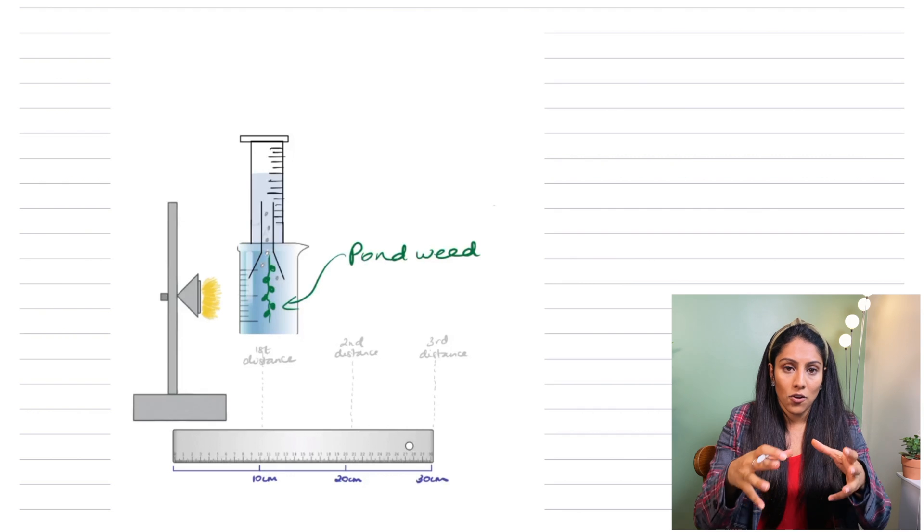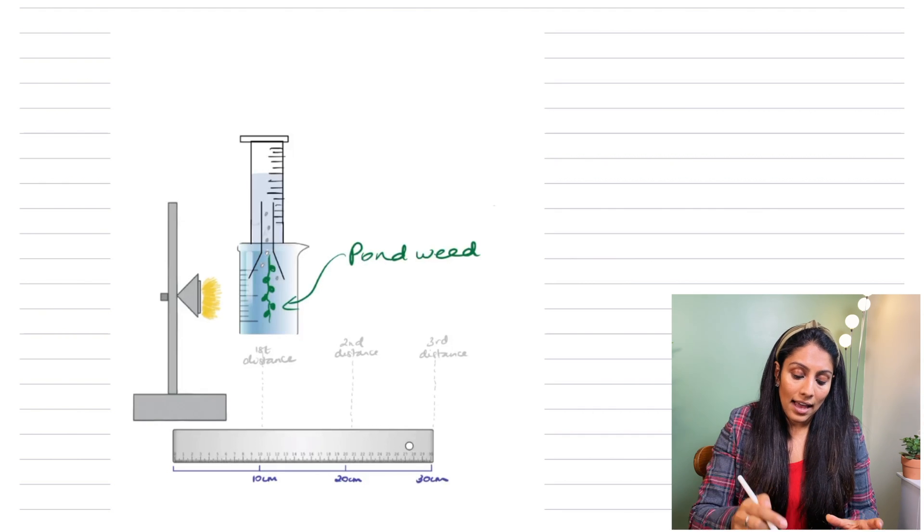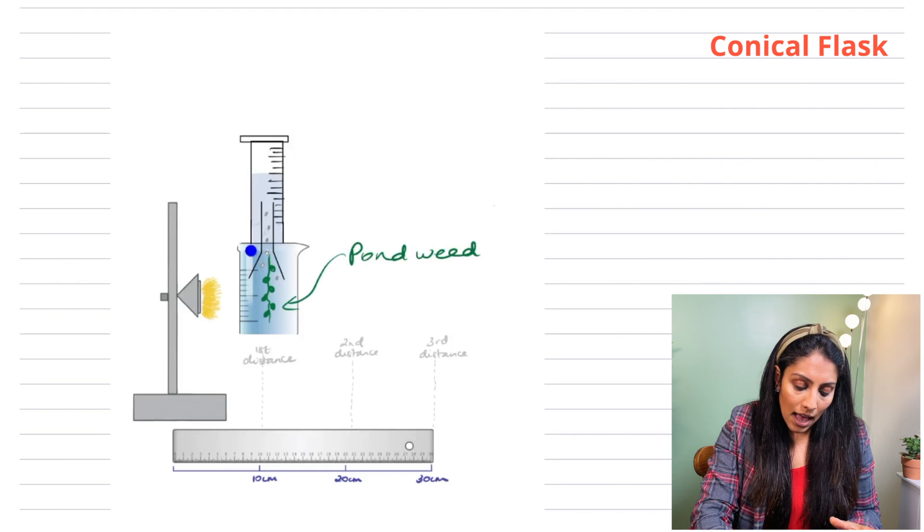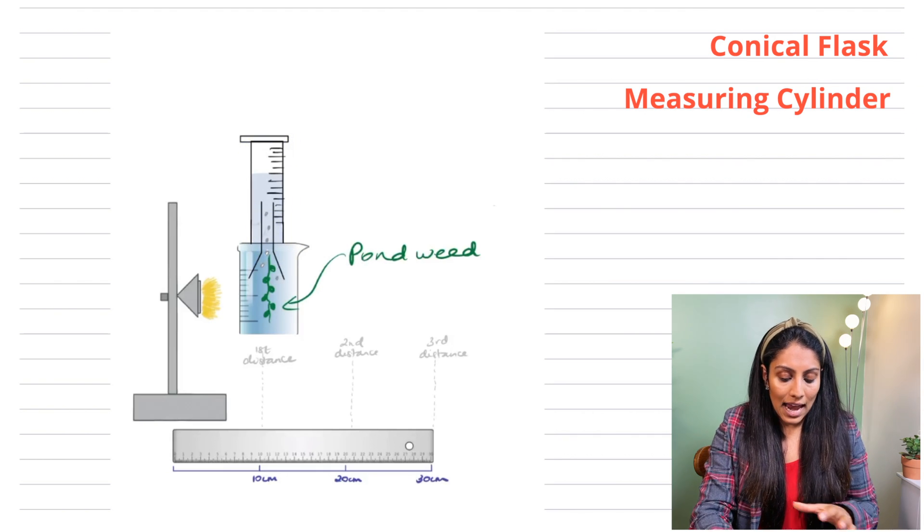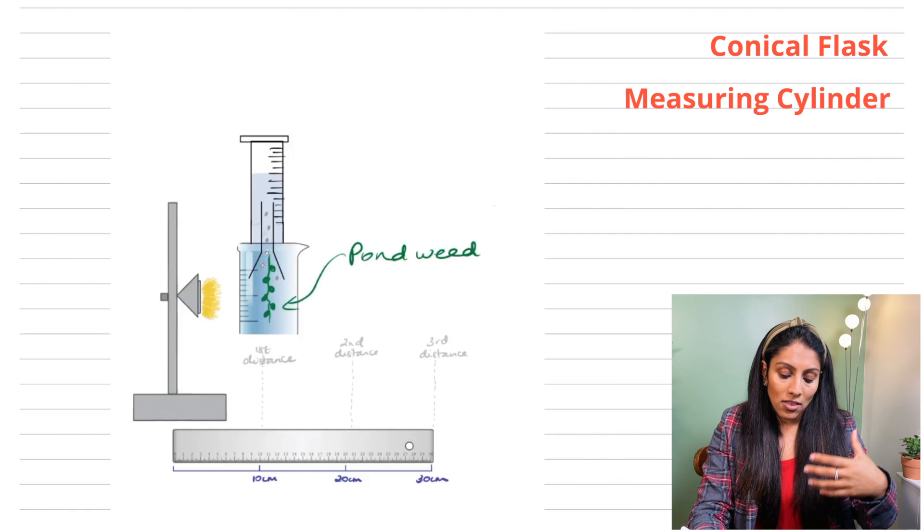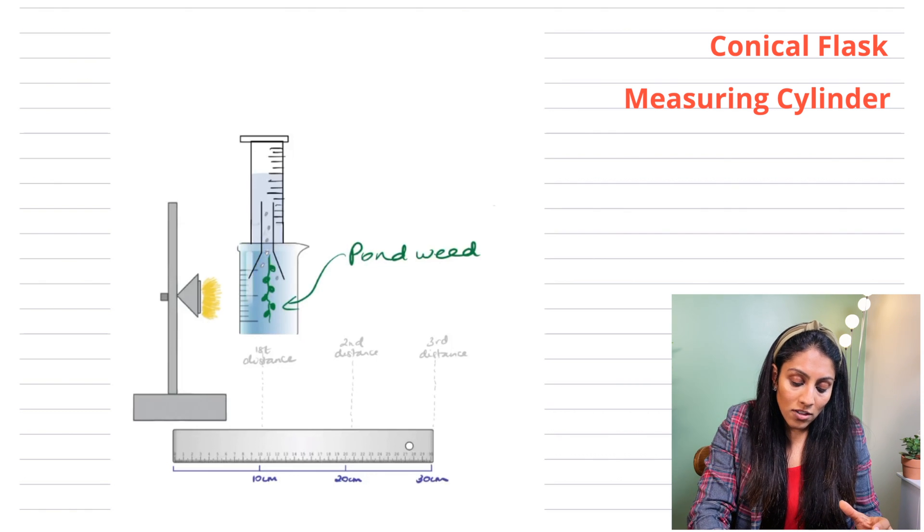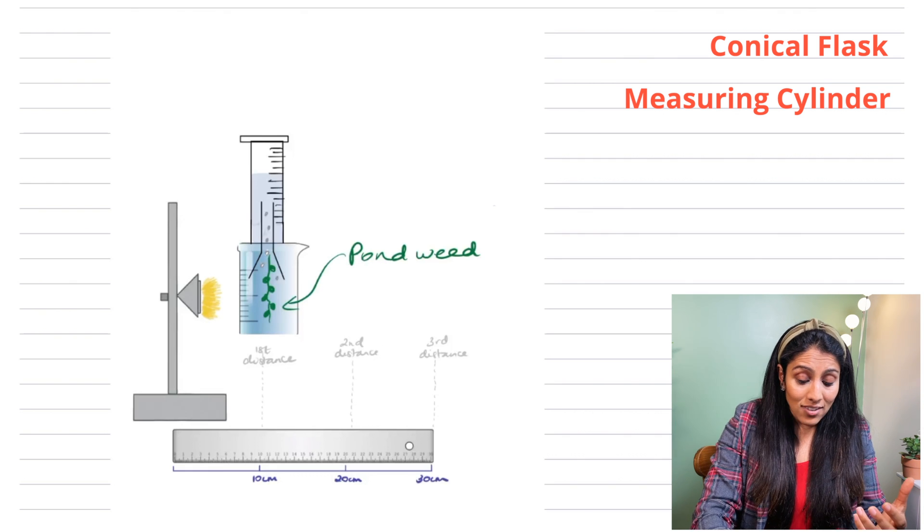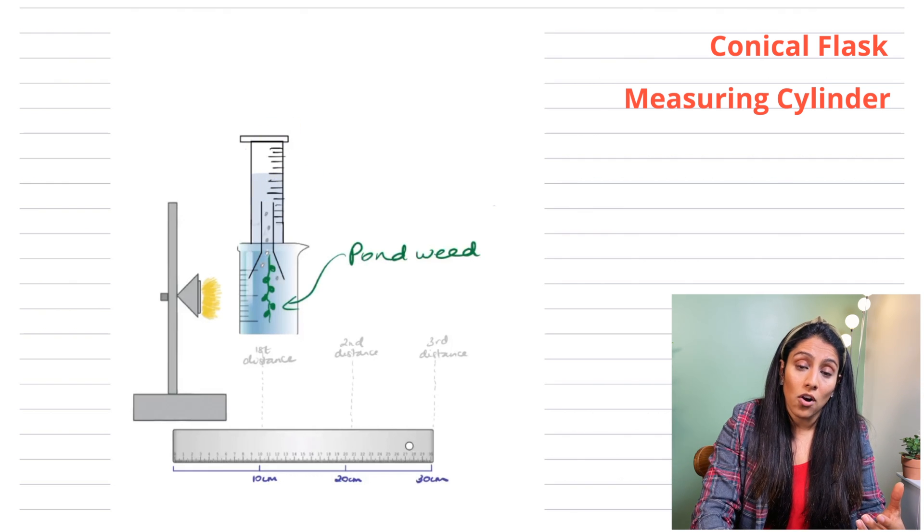So to resolve this problem we can change the method slightly. Now you can see here I've got a beaker with the solution and I've got a flask. That's my conical flask and I've got a measuring cylinder. Everything else I'm keeping the same and the reason I'm doing this is the flask will direct the oxygen bubbles into the measuring cylinder and I can now actually measure the volume of oxygen rather than counting the bubbles. So that's everything you need to know about this required practical for photosynthesis.